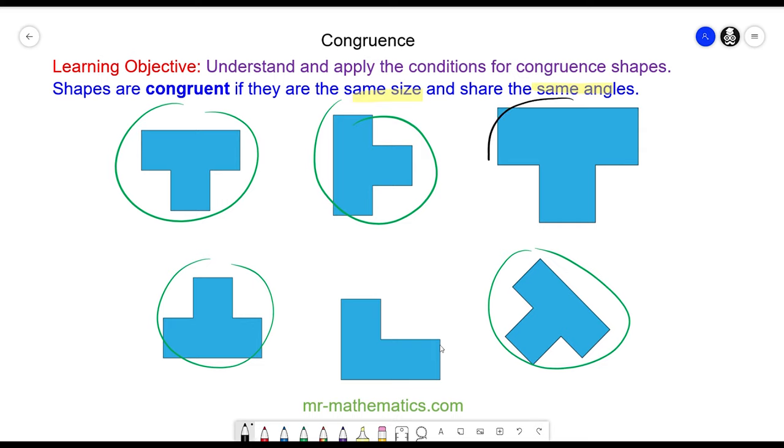This shape is similar with the other four because it has the same angles but a different size. And this shape is the same size but has different angles, so it is neither congruent nor similar to the other five.